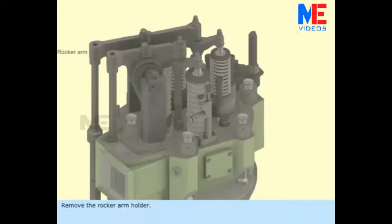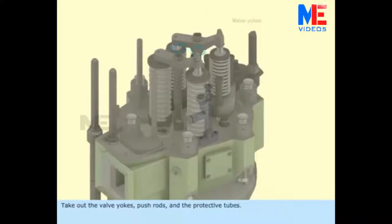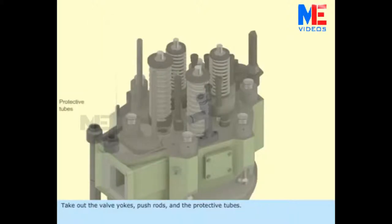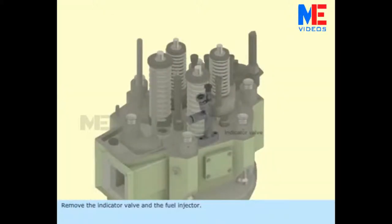Remove the rocker arm holder. Take out the valve yorks, push rods and the protective tubes. Remove the indicator valve and the fuel injector.